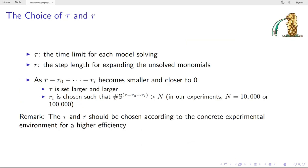We have a short discussion on the choices of T_0 and R_i, both of which affect the efficiency. As R minus R_0 minus R_1 until R_i becomes smaller and closer to zero, in principle, T_0 should be larger and larger. And R_i is chosen such that the number of expanded monomials surpasses given threshold. And in our experiments, we usually choose N as 10,000 or 100,000. Please note that T_0 and R_i should be chosen according to the concrete experimental environment.